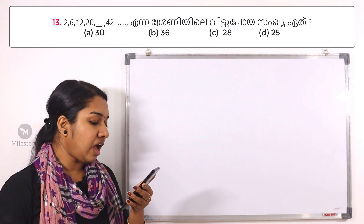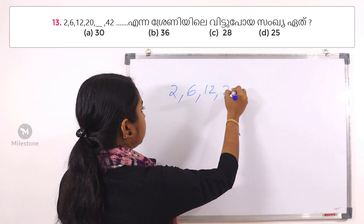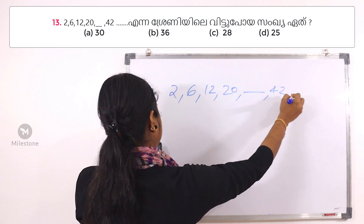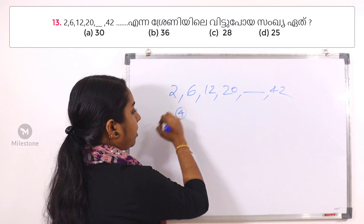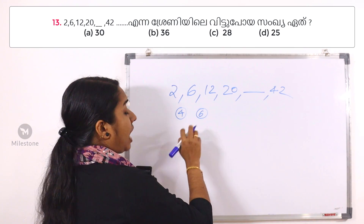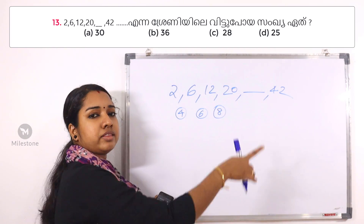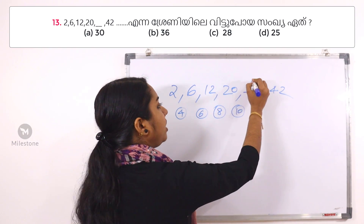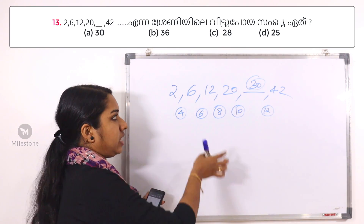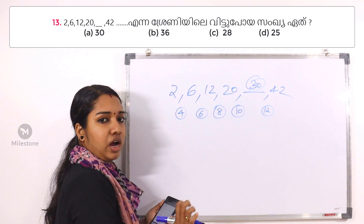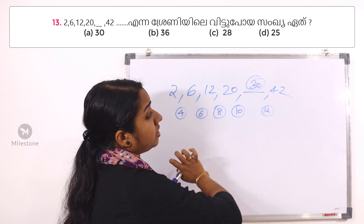Next question involving the sequence: 2, 6, 12, 20, 42. We look at the pattern: differences are 4, 6, 8, then increasing by 2 each time. The sequence follows 1×2, 2×3, 3×4, 4×5, and so the next terms follow the pattern. The answer is 30.